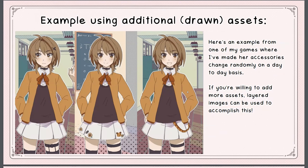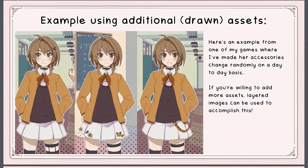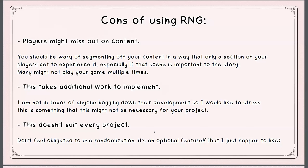Where could randomization fit? Looking for areas where it could be used is important — considering both the variants as well as the change between those variants, and what that could mean, because the change itself is often very important. Conveying a character's personality is quite a good one. Back to that character — she likes to accessorize, and therefore having different accessories is pretty important, even though exactly which accessory she has on that day isn't the focus.